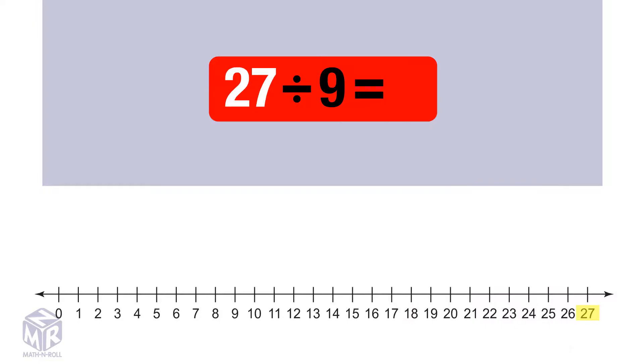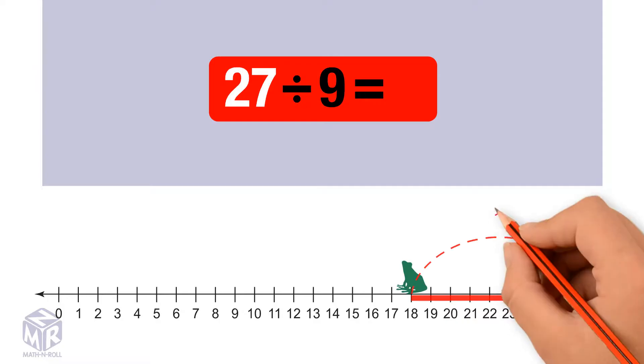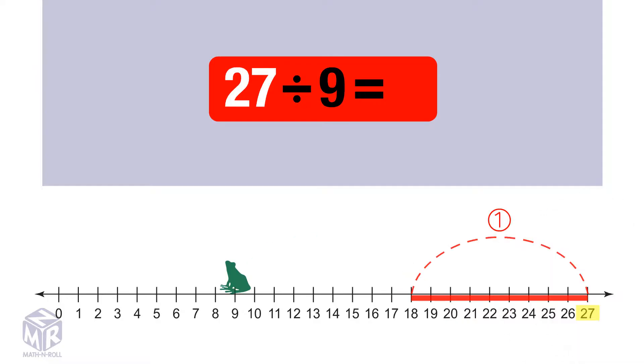Do this as many times as you can until you reach 0. 1, 2, 3. We jumped back 3 times, so 27 divided by 9 equals 3.